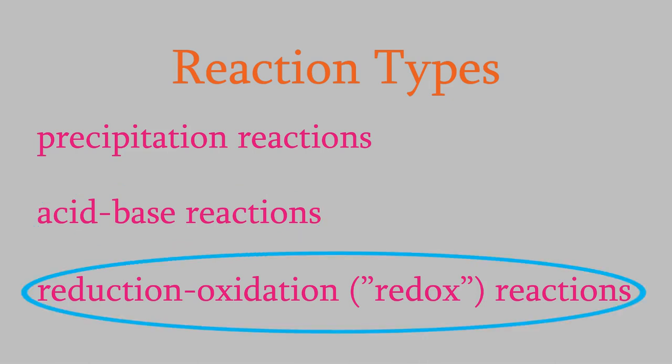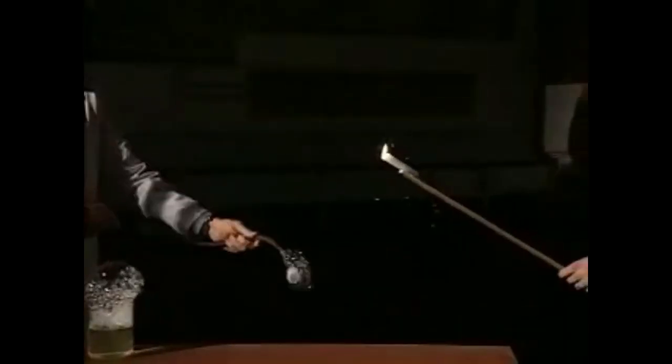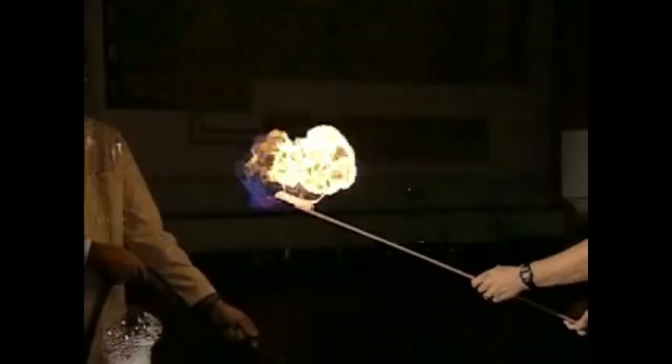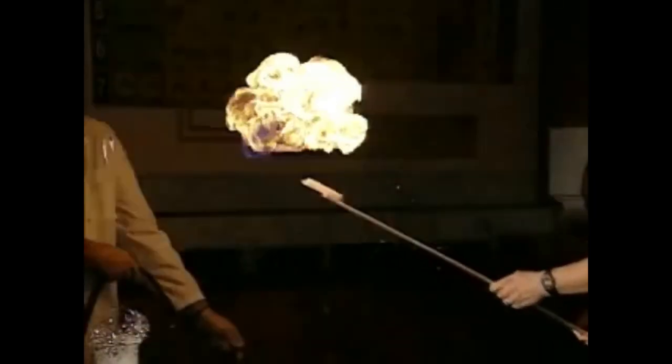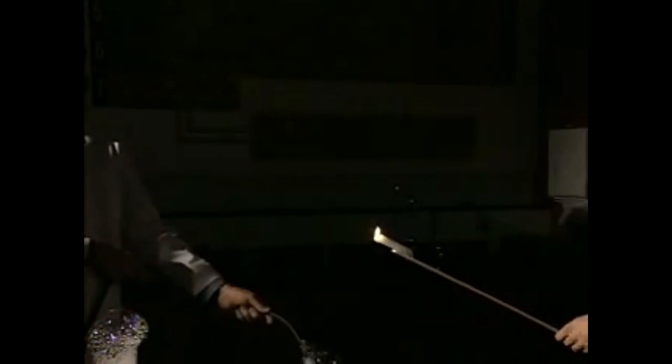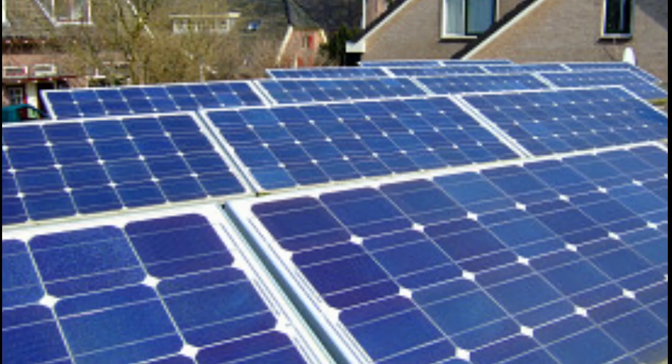Redox reactions are really interesting. They include combustion reactions and explosions, and many different kinds of biological reactions like those involved with respiration and photosynthesis. As you can guess from those examples, redox reactions often release large amounts of energy, so they can be really useful when we want to develop new technologies like batteries, fuels, or solar panels. For that reason, we'll talk about redox reactions in future courses like physical chemistry.